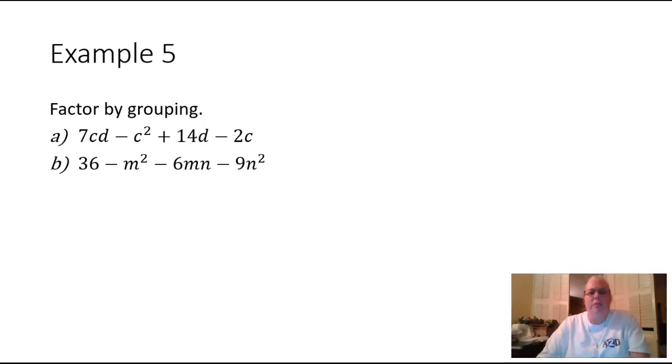This is example 5 from lesson R.3. These two problems we are supposed to factor by grouping. Now normally when you have a polynomial and it has four terms in it, what we're going to do is drop parentheses around the first two and around the last two, and then we're going to try the grouping thing this way.